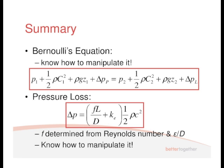Pressure loss: delta P equals FL upon D plus the effective loss factor multiplied by the dynamic pressure. The F is determined from the Moody chart, which you need the Reynolds number and the relative roughness for. Again, you need to know how to manipulate it.